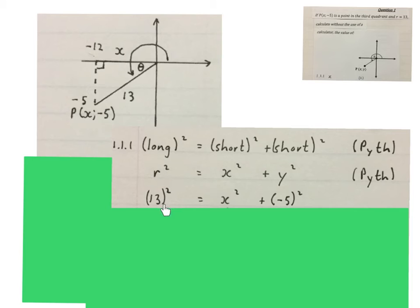So I wrote the 13 at the radius or the long one, put the -5 over there, and the x that we don't have over here. Now we can just solve a normal equation. This is 169 = x² + 25. We bring the 25 over and minus it. Then we square root both sides.